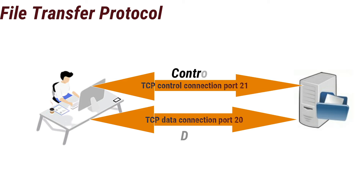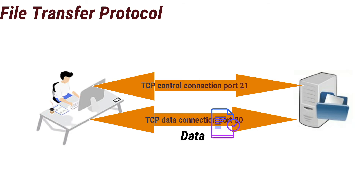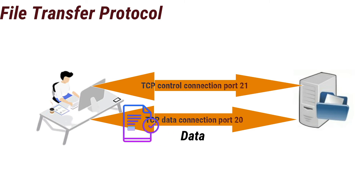FTP uses two parallel TCP connections to transfer a file: a control connection and a data connection. The control connection is used for sending control information between the two hosts, such as user identification, password, commands to change a remote directory, and commands to put and get files. The data connection is used to send a file.